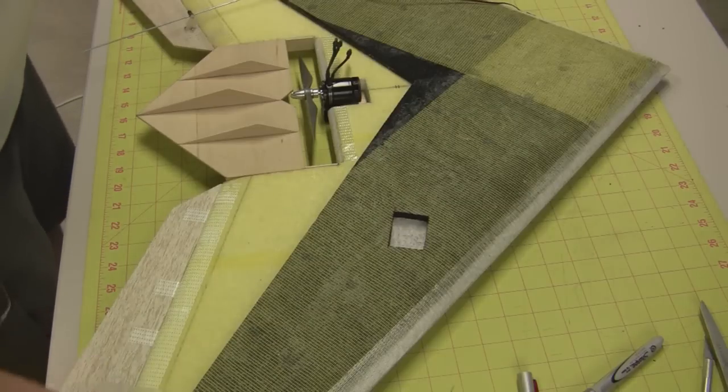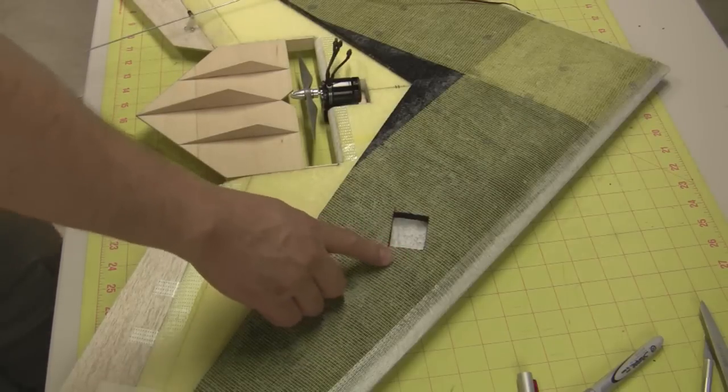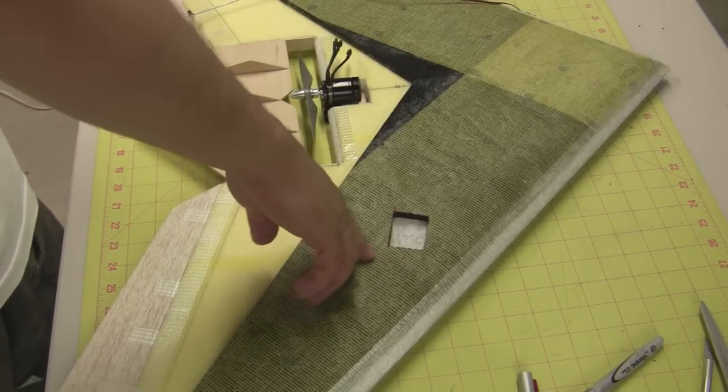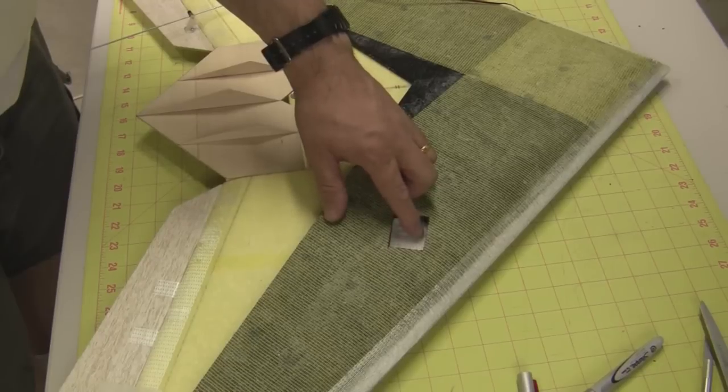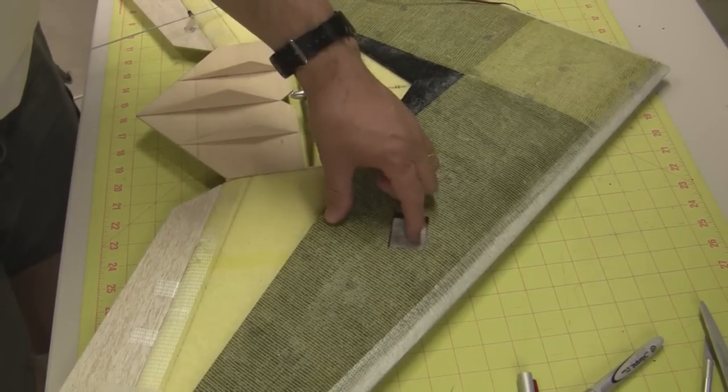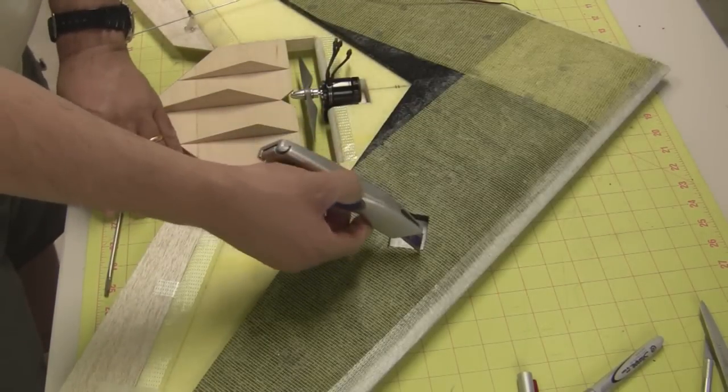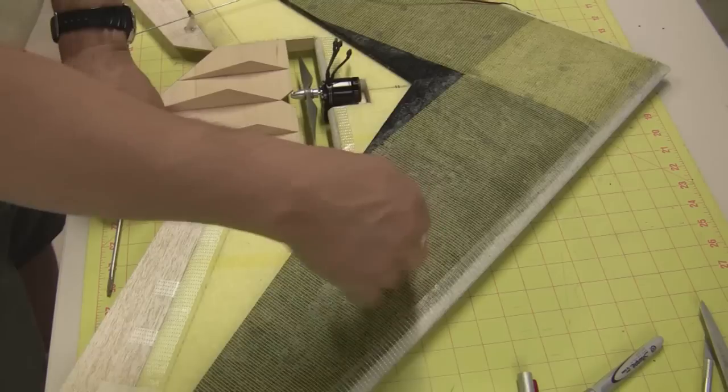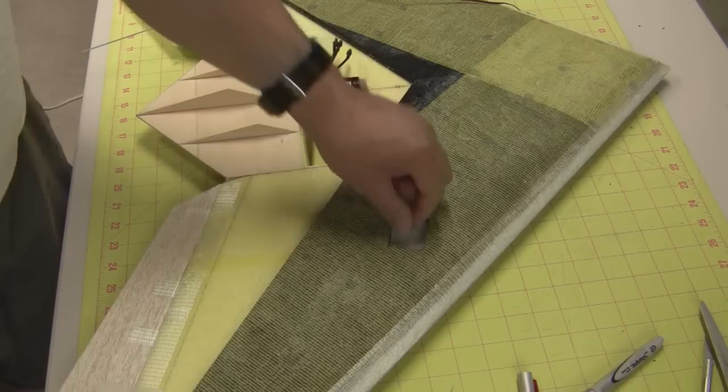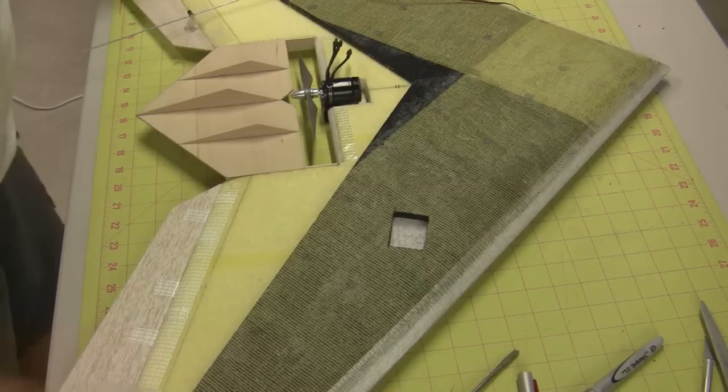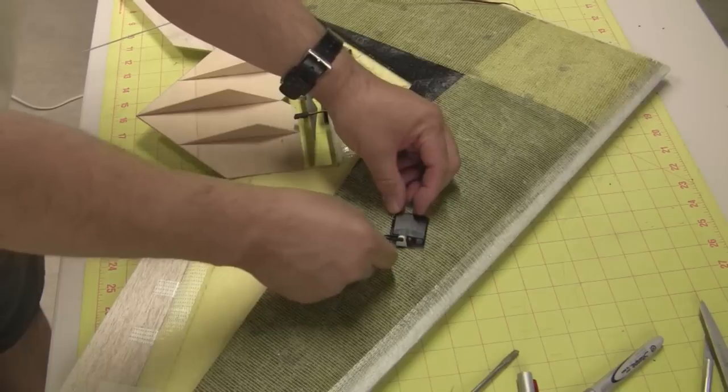After you've got the squares drawn onto the foam, go ahead and cut them out with the box cutter. You can cut through the first layer of the fiberglass and through the KF airfoil. Don't try to cut through the bottom piece of the fiberglass—peel up the foam first. After you've got that out, then take the box cutter again and cut the second layer of fiberglass. You don't need to cut into the foam very deep—just cut the fiberglass and peel it out.